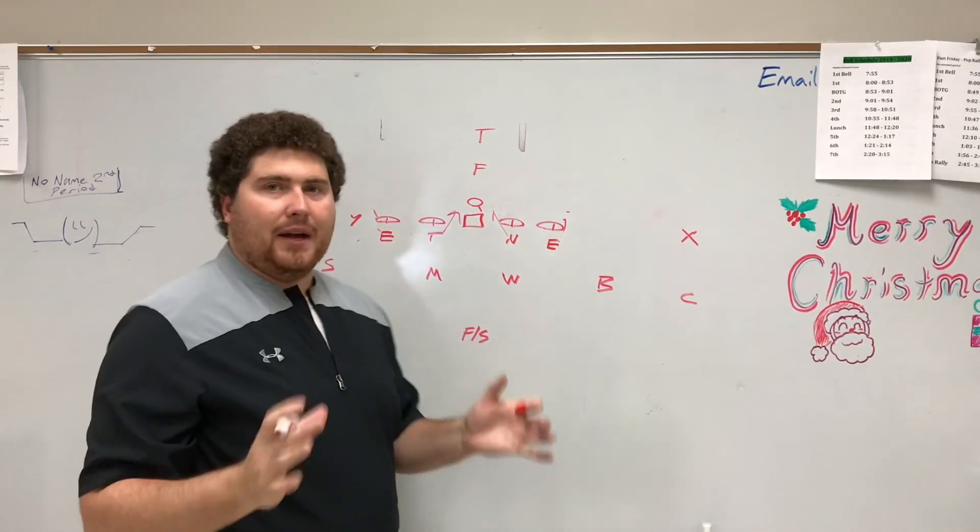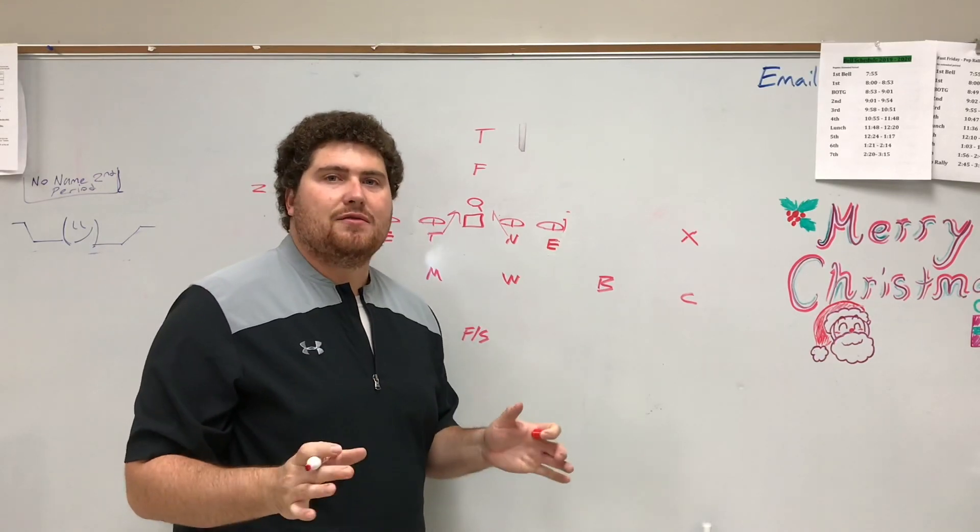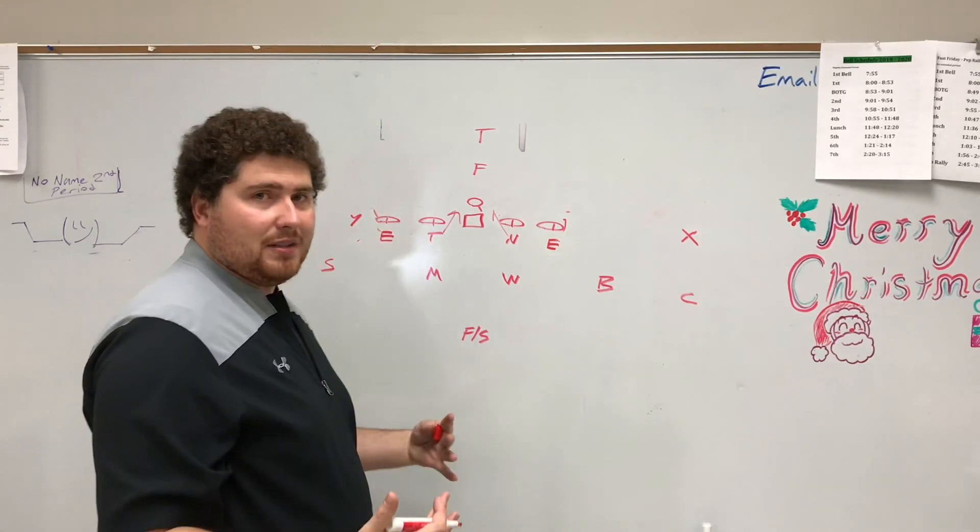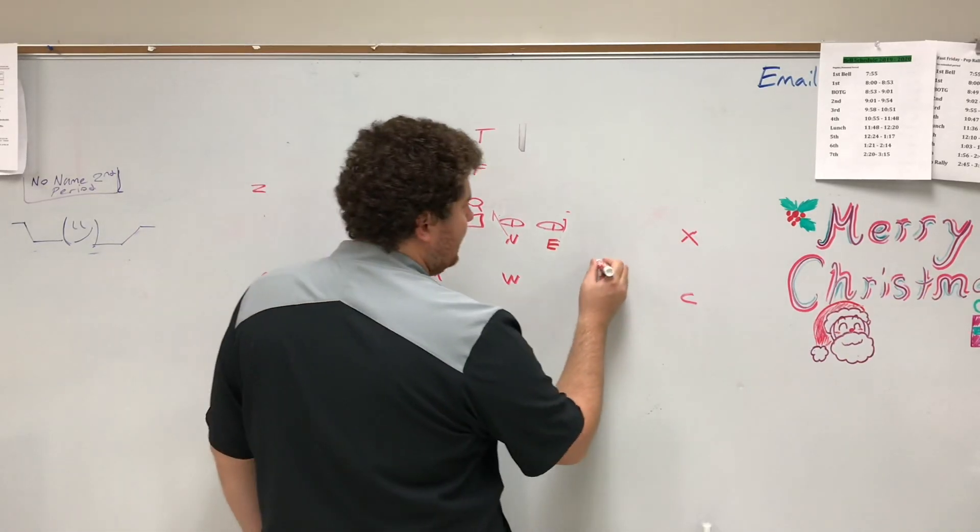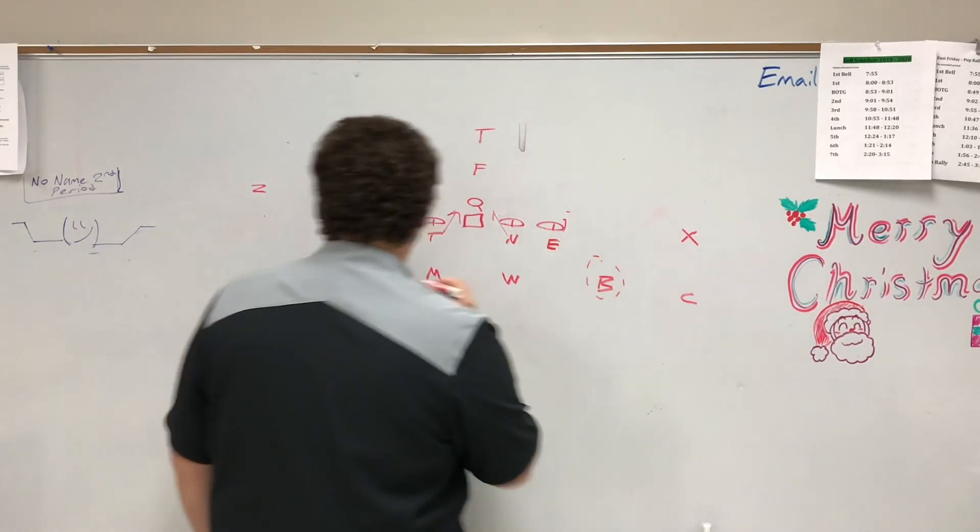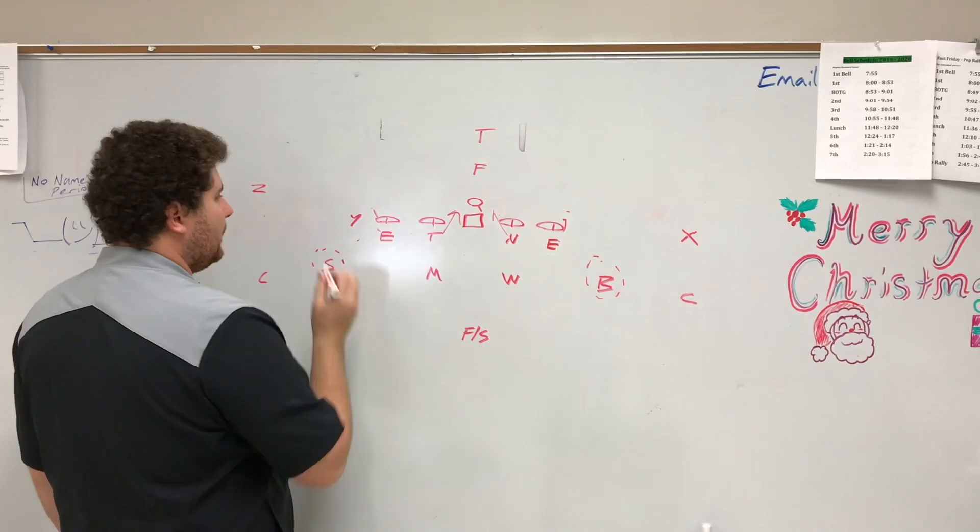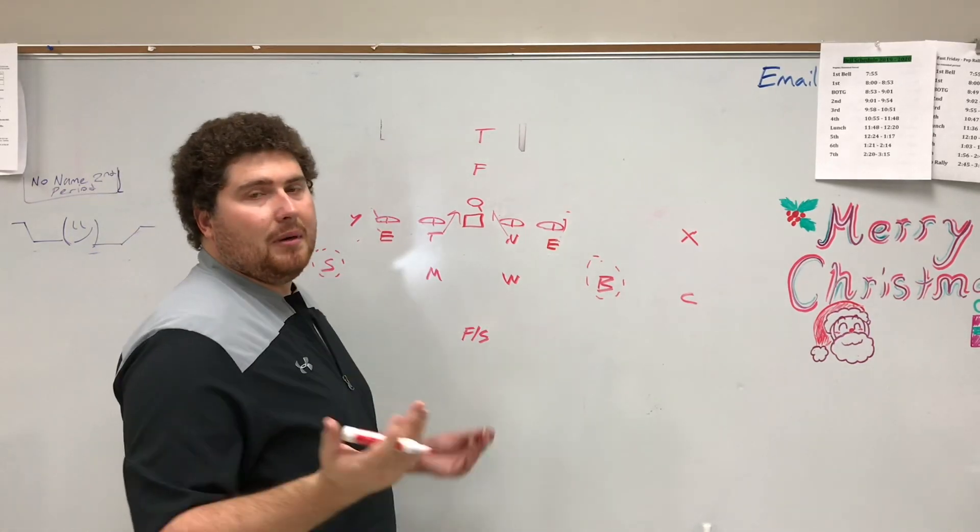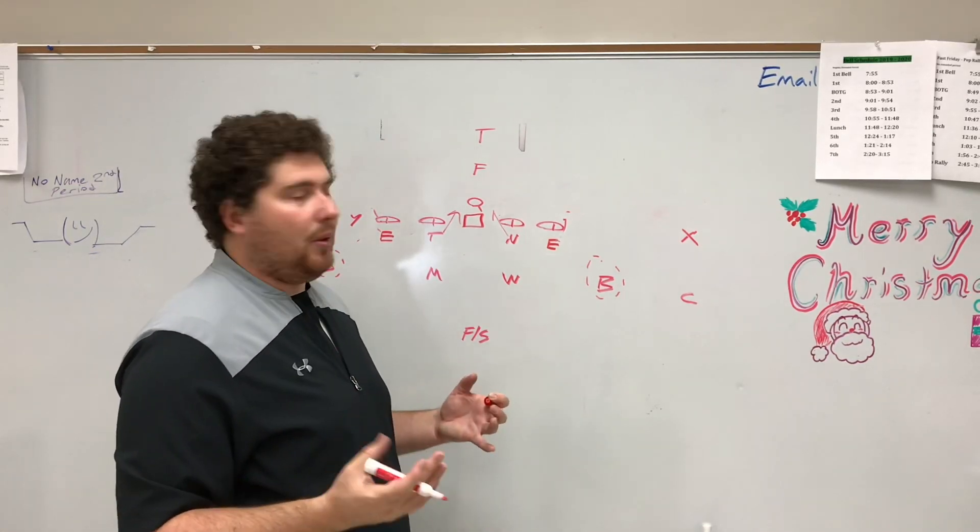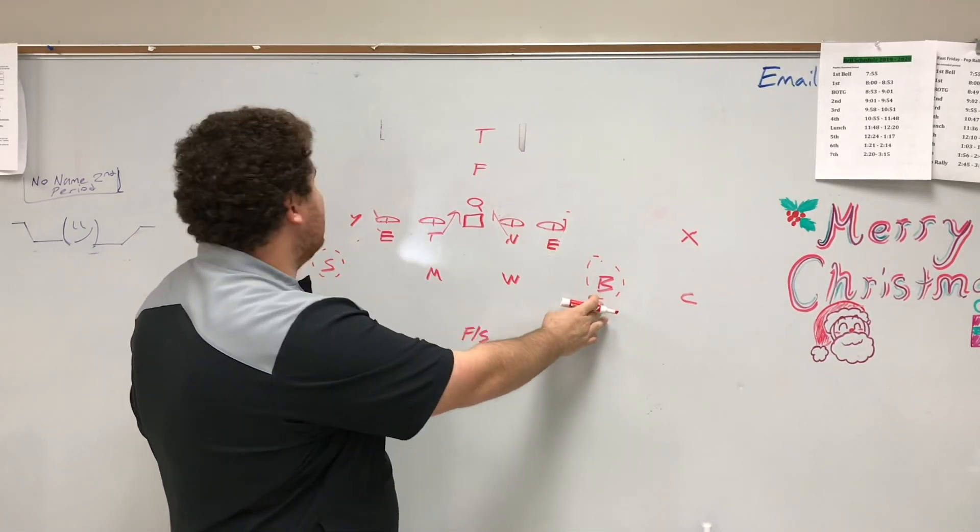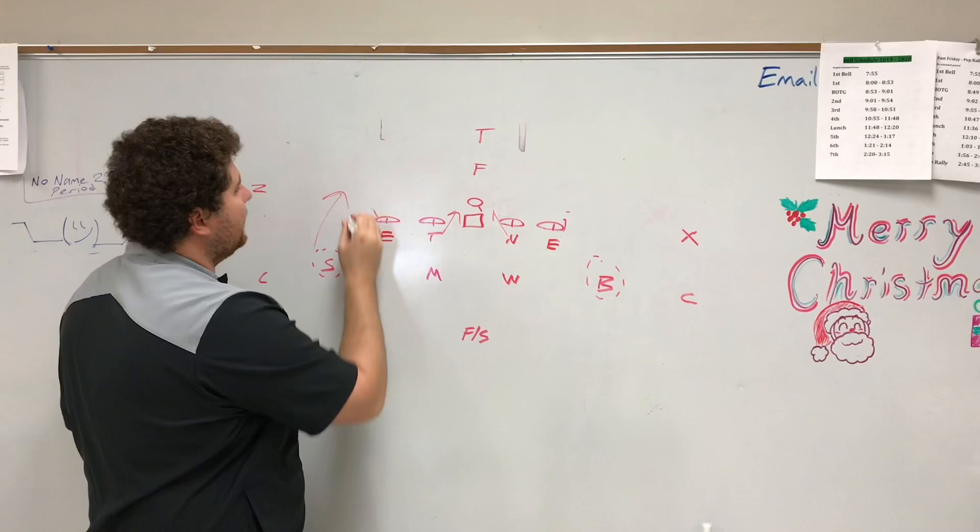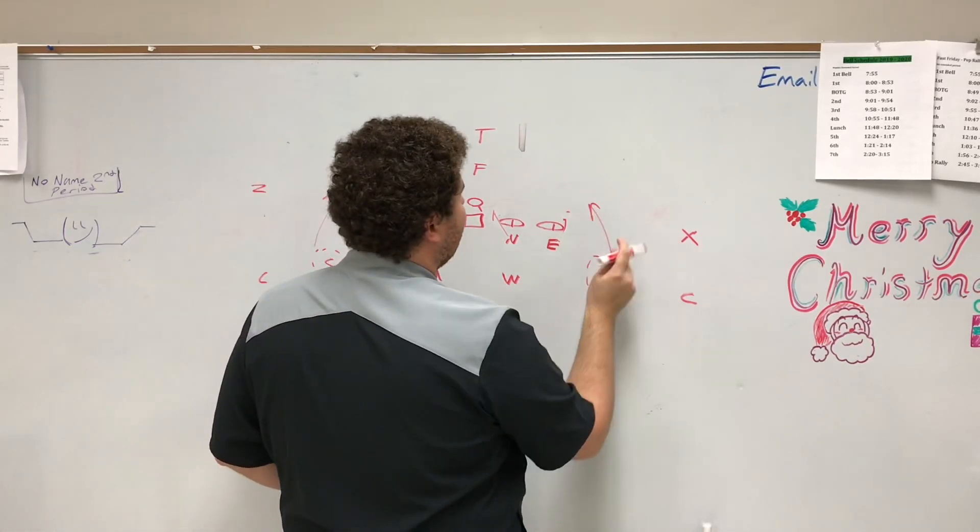But in a way, the players that we had to have to make this defense successful, to stop the outside run, especially in youth football, was these two players right here, the outside safeties. They call them outside linebackers, but in my mind, they were a safety-type player. These had to be, at this level, my best tacklers, because they're the force defender that's going to come up.